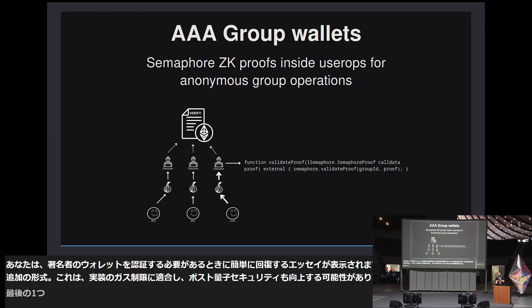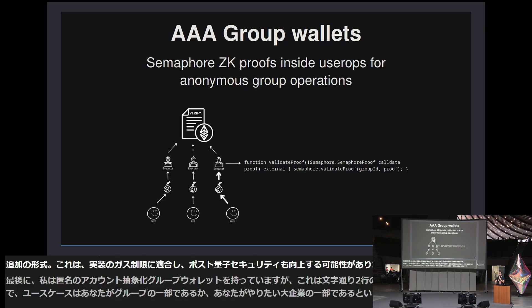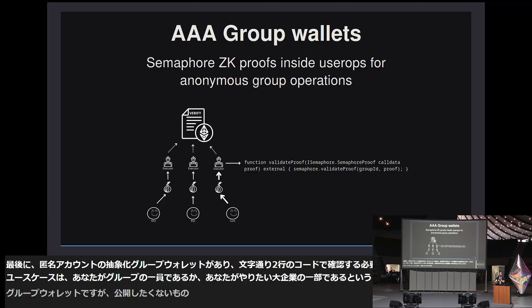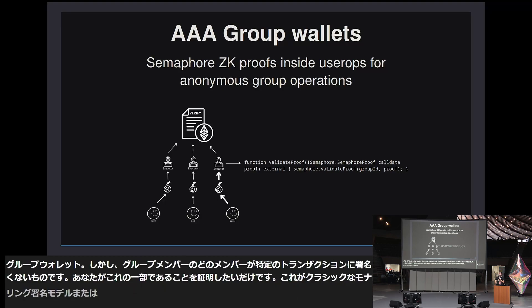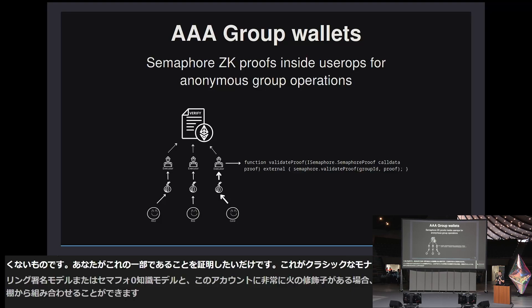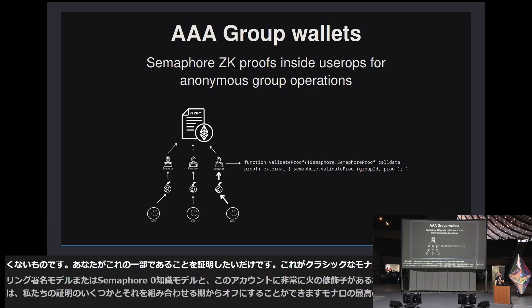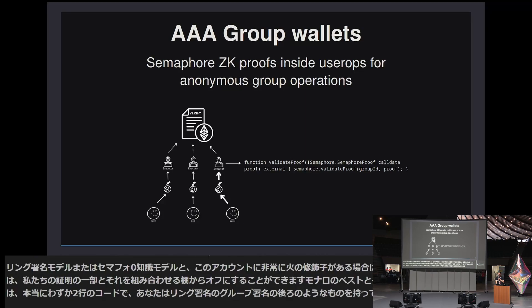Last case study: anonymous account-abstracted group wallets, which literally takes two lines of code to verify. The use case is that you are part of a group or a big company, you want a group wallet, but you don't want to expose which group member is signing a particular transaction — you only want to prove that you are part of the group. This is the classic Monero ring signature model or the Semaphore zero-knowledge model. If you have a verifier modifier in the account-abstracted wallet, you can off-the-shelf combine it with Semaphore proofs to have the best of Monero and the best of Ethereum in just two lines of code — ring signatures and group signatures behind an account-abstracted wallet with Semaphore.